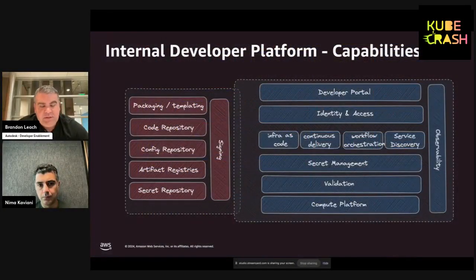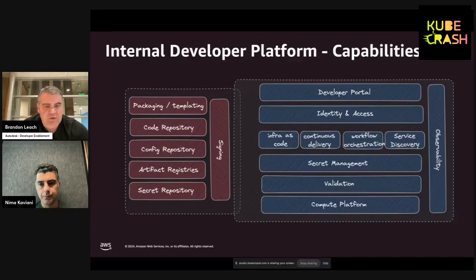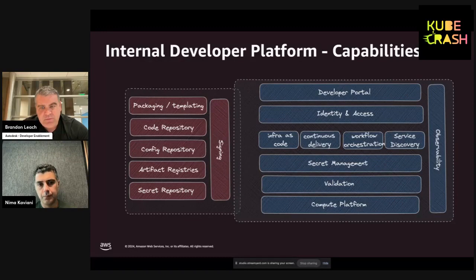The first thing we did was set the technology aside and ask: what is an internal developer platform from a capability standpoint? Adobe had a capability map, Autodesk had a capability map, and a couple of the other members had their own. We got together and spent a good amount of time merging them together to create one common capability map to organize our efforts. This is really powerful because it allows us to look at the capabilities that make up an internal developer platform, define what they provide, and the integrations between them.